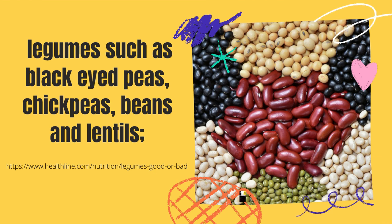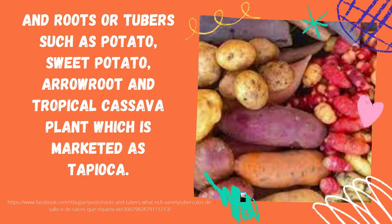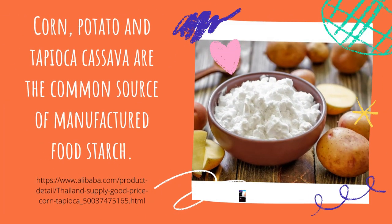In addition, we can also get starch from legumes such as black-eyed peas, chickpeas, peas, beans, and lentils. We can also get starches from roots or tubers such as potato, sweet potato, arrowroot, and the tropical cassava plant, which is marketed as tapioca. Corn, potato, and tapioca cassava are the most common sources of manufactured food starch.